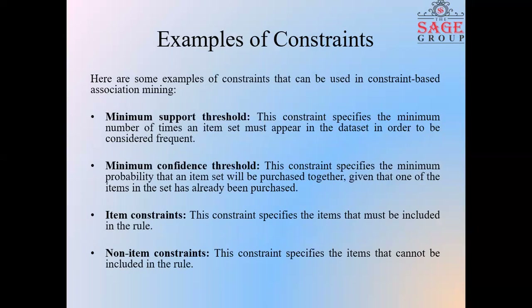Here are some examples of constraints that can be used in Constraint-Based Association Mining. The first is minimum support threshold — this constraint specifies the minimum number of times an item set must appear in the dataset in order to be considered frequent. The second is minimum confidence threshold — this specifies the minimum probability that an item set will be purchased together given that one of the items in the set has already been purchased.